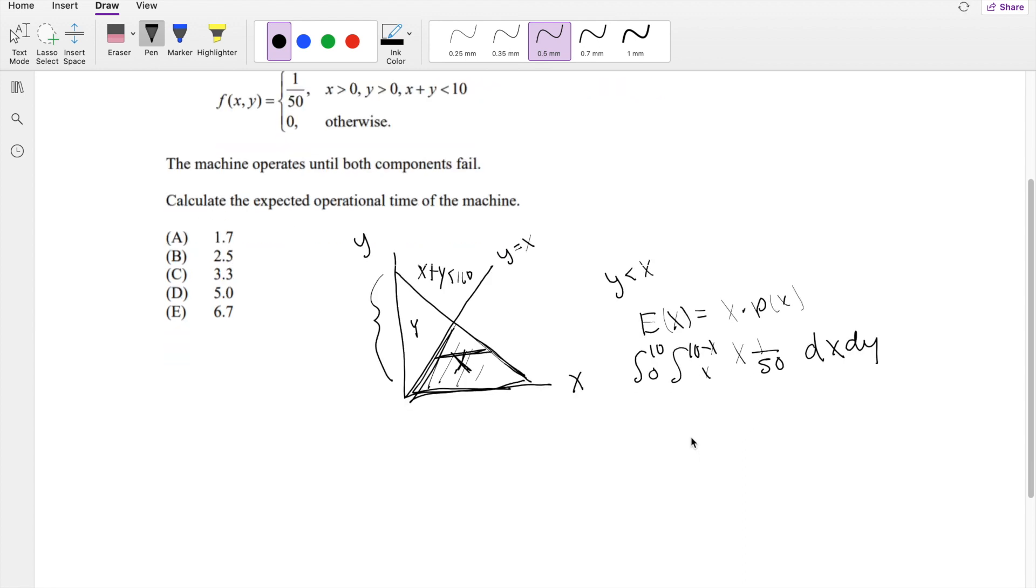Or, instead of solving this integral, we can also think, because we know this is a uniform distribution, this area right here must be uniform, and so we can actually take the area of this triangle, which is going to be 1 half base, which is equal to 10, times height, which is 5, which is equal to 25.